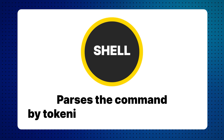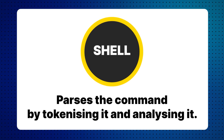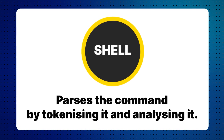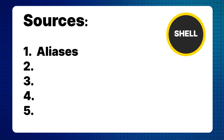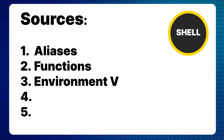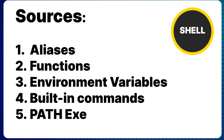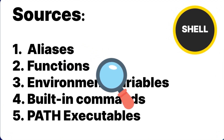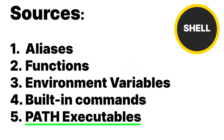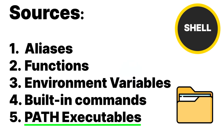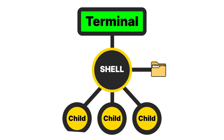Once you hit enter, a lot happens. The shell has to parse the command by first tokenizing it and then analyzing it. To check if certain tokens are valid, it checks its sources: aliases, functions, environment variables, built-in commands, and path executables. Once it finds a source, for example an executable, it locates it on the file system and executes it as a completely separate process as a child, passing along any other arguments provided.